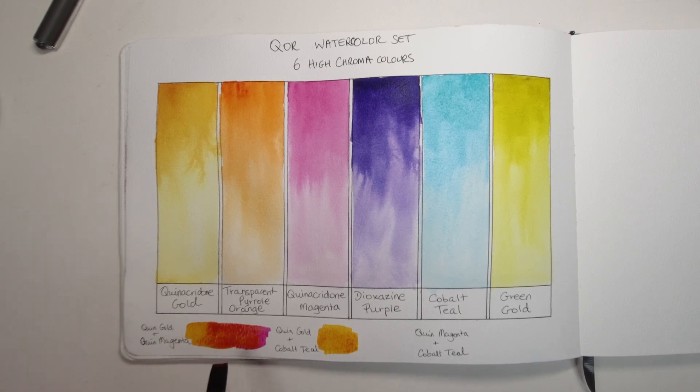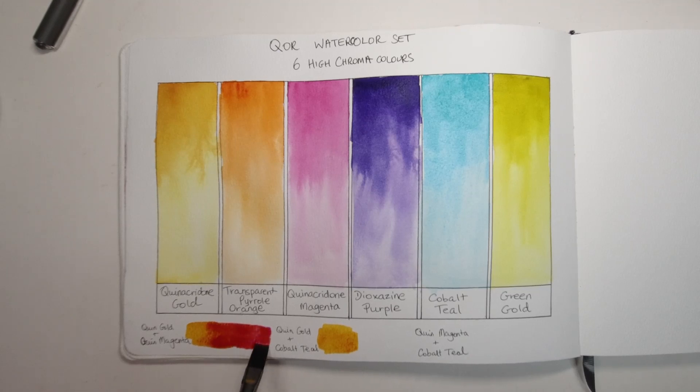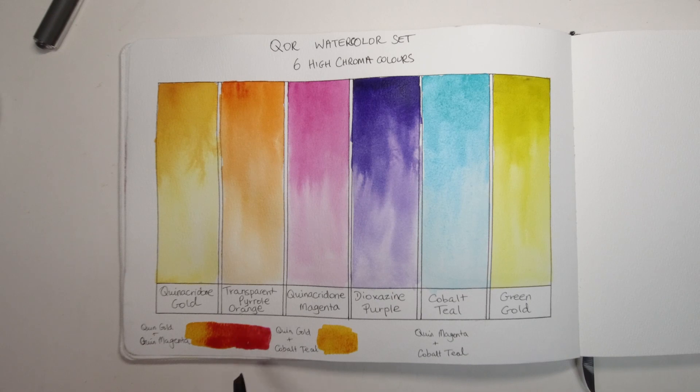I did sort of mess about a bit trying to balance the gold and the magenta together because I'd either go in one or the other direction too much, but my end effect was a lovely orange color, probably a bit richer than the transparent pyrrole orange in this case. So that's nice to have.